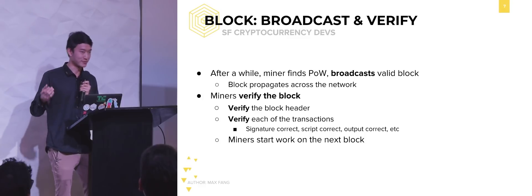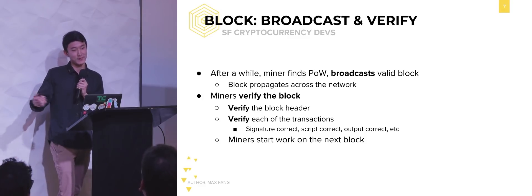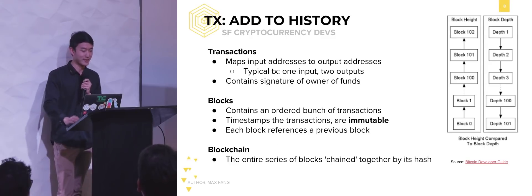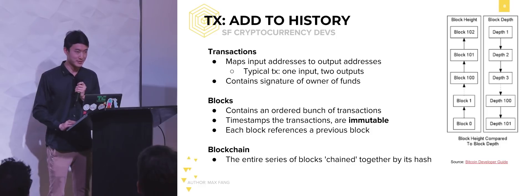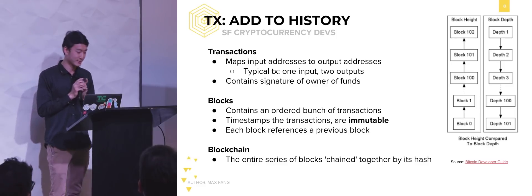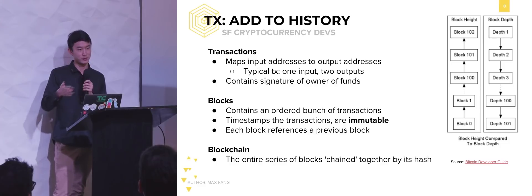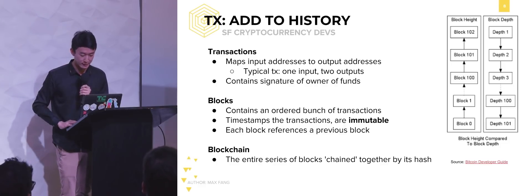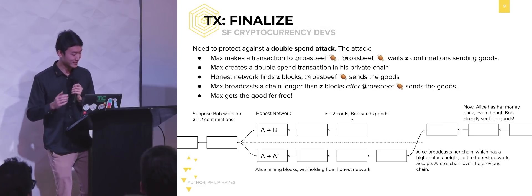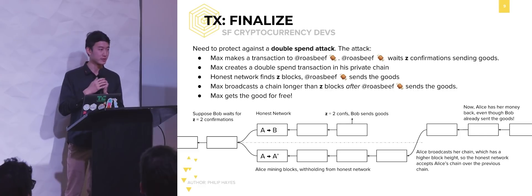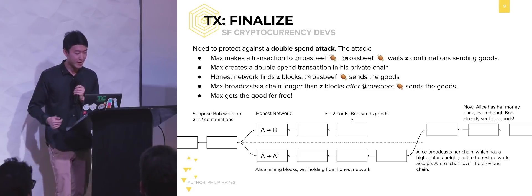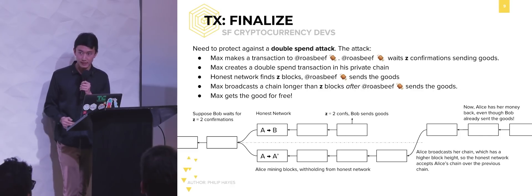Then after about 10 minutes on average, some miner finds a block. Other miners have to verify this block — this one megabyte block gets propagated across the network and they verify all the transactions in it. Once you have an on-chain transaction, it's on your hard drive forever, and that's true for every single node running Bitcoin software. Lastly, you have to accept this transaction — the recipient needs to wait an average of six confirmations to be secure against double-spend attacks.